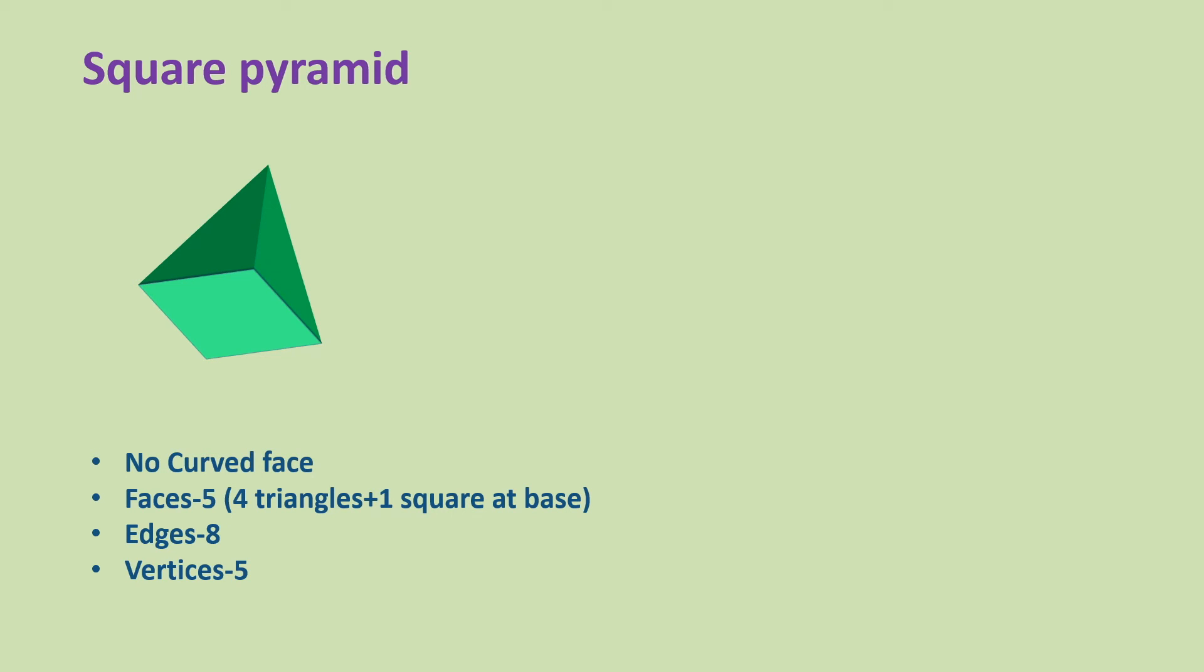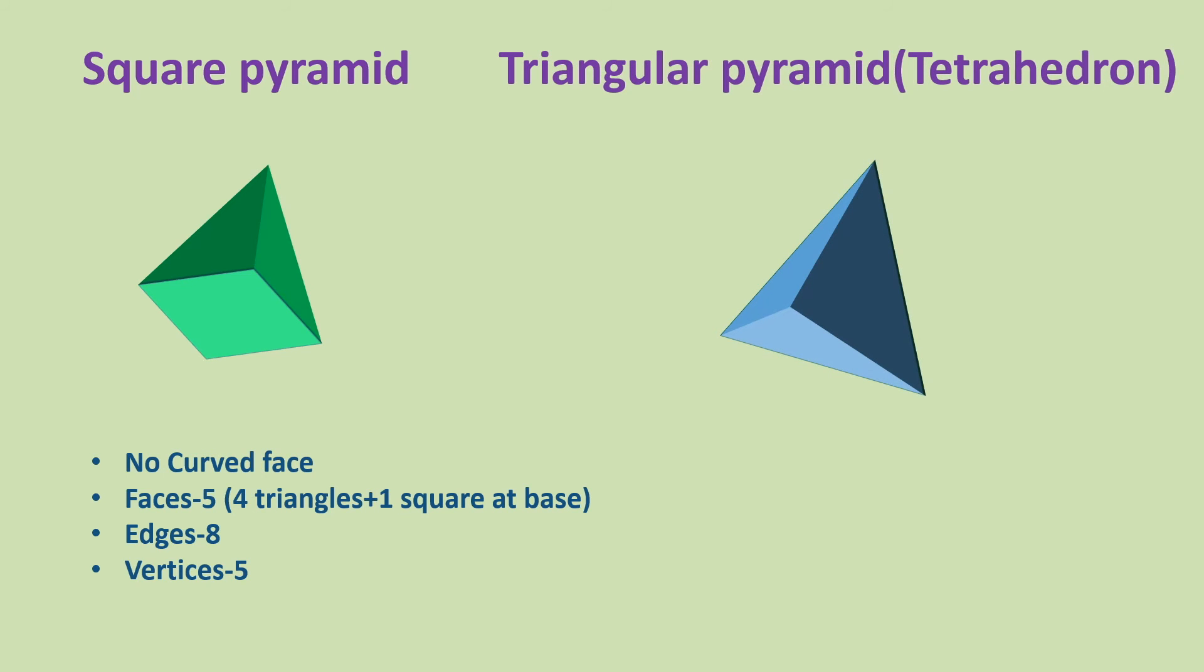It has eight edges and five vertices. Triangular pyramid is also called tetrahedron. Tetrahedron has no curved face but it has four faces which are triangular in shape.